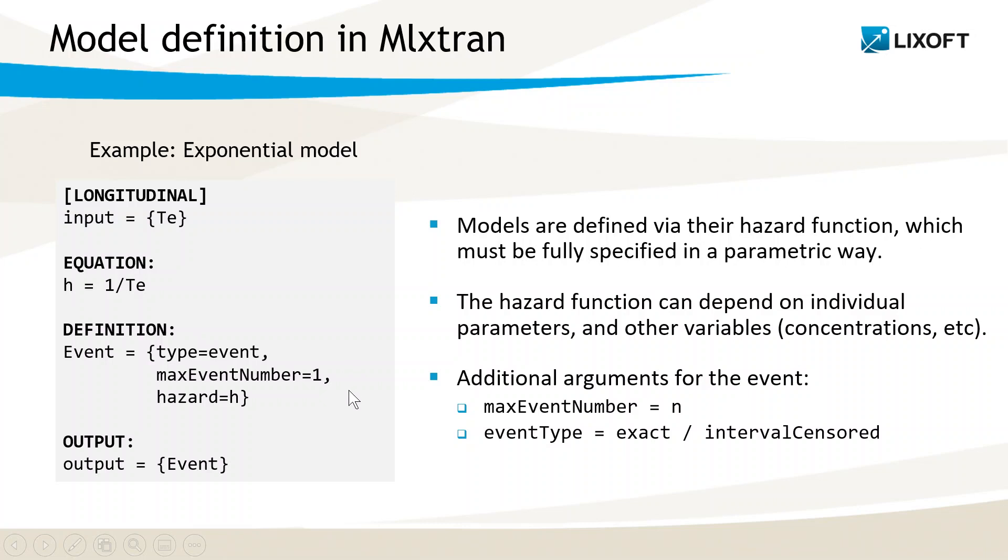These lines define a random variable representing the time of the event, which follows a law of probability H. The name of the variable here is event, but it can be anything. It will then be used as an output to be matched to the time-to-event data of the dataset.